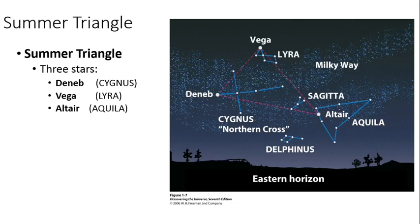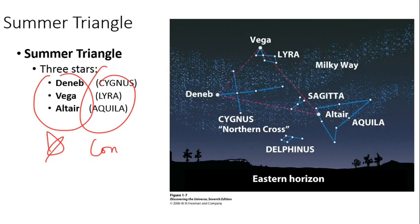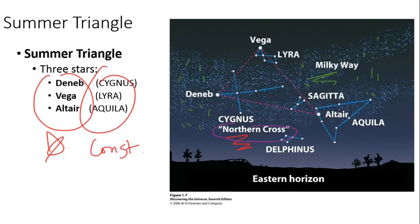The last one is the Summer Triangle. Like I said, this is still up in the first part of November. Over here we have the stars, and we have the constellations. Can you see this stuff right here? That is the Milky Way, and we are actually looking into the plane of our galaxy. We have the constellation sometimes called the Northern Cross, but it's also Cygnus the Swan. The Swan is flying up the Milky Way, and in Cygnus we have the bright star Deneb.